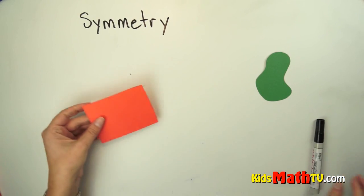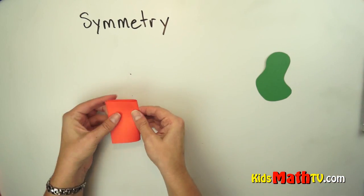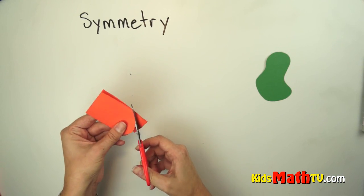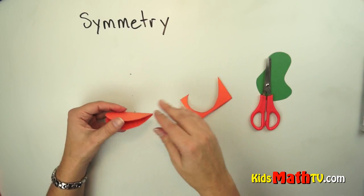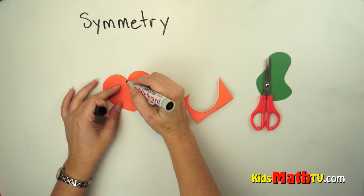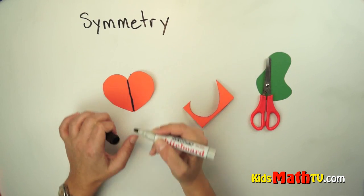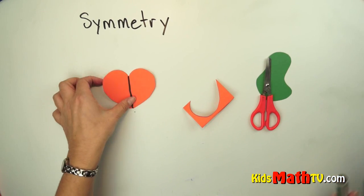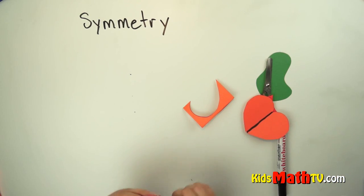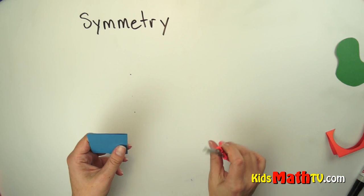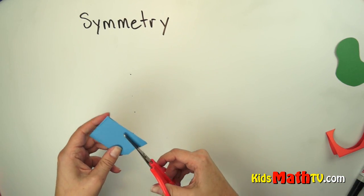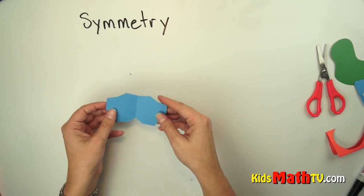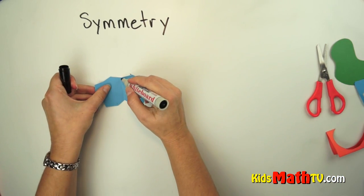One way to guarantee that you have symmetry is to create it. If you take a paper, fold it in half, and cut a shape — such as the very famous heart — this now has symmetry along the line that was folded. If I were to cut it in half, this shape would be exactly the same shape and size as this half. You can do any type of shape and make symmetry if you fold along the line.